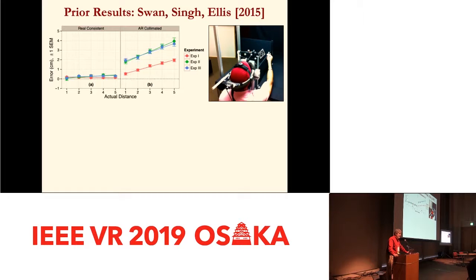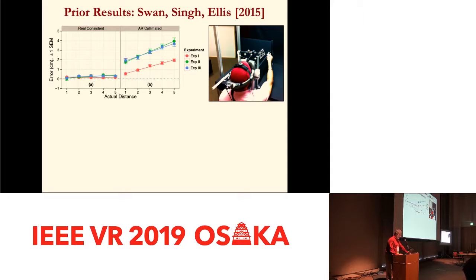Error greater than zero means it was placed farther than intended; error under zero means less than intended. There were two conditions in this prior work. In the real consistent condition, the target object was a real object — the control condition — and there was very little error. In the AR collimated condition, the target was shown in an NVIS display, a typical display at the time. Depth matches were overestimated from half a centimeter to about four centimeters. The likely reason we hypothesized was that the display had non-adjustable collimating optics and was focused at optical infinity, even though disparity cues suggested a closer distance.